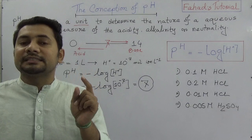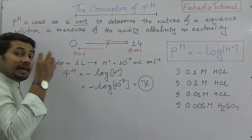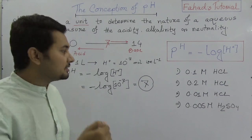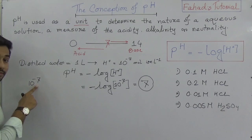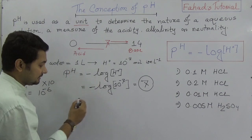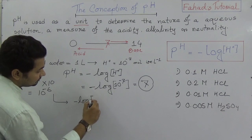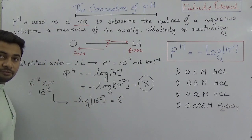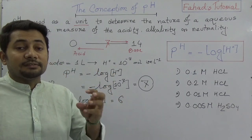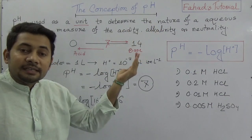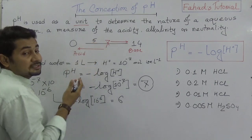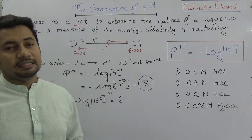When you get a pH value of 7, the solution is neutral. If we add some acid to this distilled water, the concentration of H+ will increase. Suppose it increases 10 times — it goes from 10⁻⁷ to 10⁻⁶ — then it becomes minus log 10⁻⁶, and the value will be 6. So if you increase the acid, the concentration of H+ increases and the pH value decreases. If the pH value is 5, it's more acidic; if it is 1, that is a strong acid.